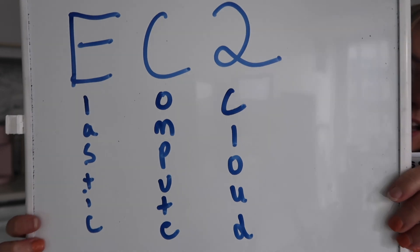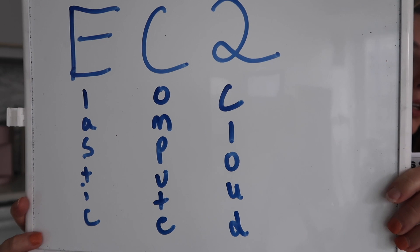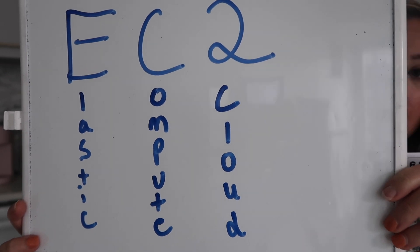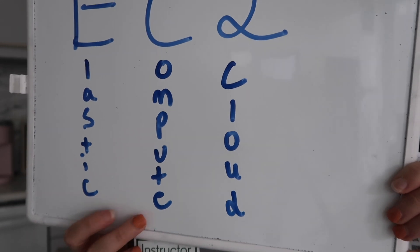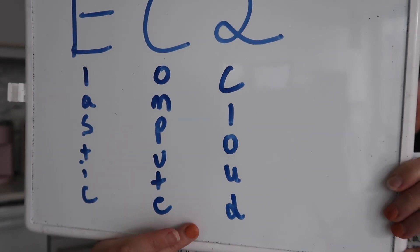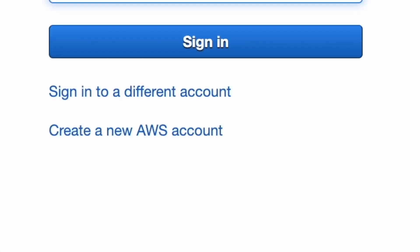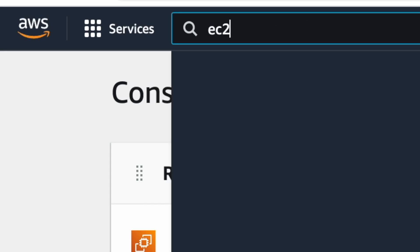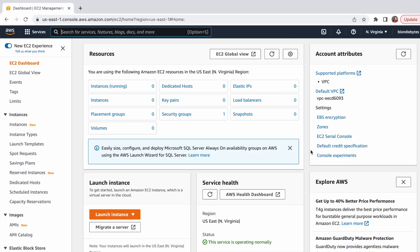It's Elastic because you can change that computer whenever you want — how many of them you use for your code as well as what the specs of that computer are. It can compute things and it lives in the Amazon cloud. That's an EC2, and you can rent one right on their website. You just Google AWS, go to their website, log in, search EC2 in the services section, and there you are — you're in the right place to rent an EC2.